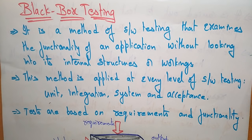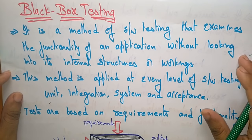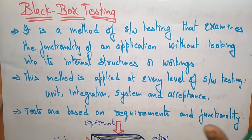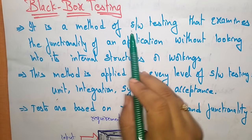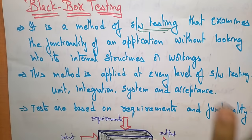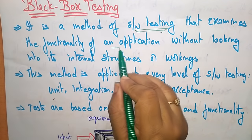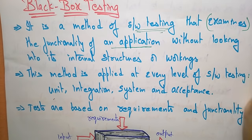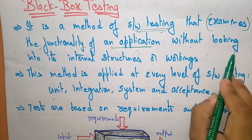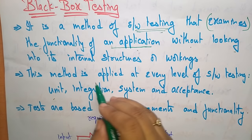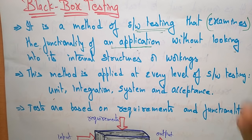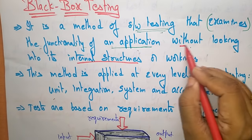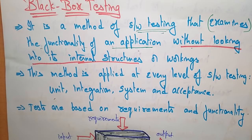Coming to the next topic in software engineering — black box testing. Black box testing is a method of software testing that examines the functionality of an application without looking into its internal structure or working. The main thing here is that black box testing only examines the functionality of an application; it doesn't involve the internal structure at all.